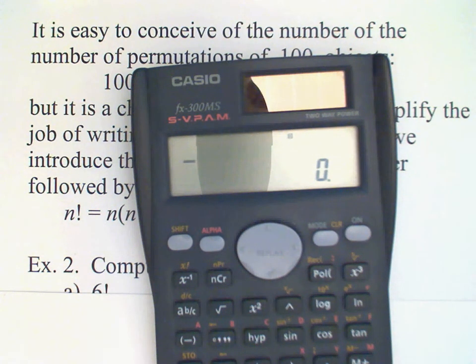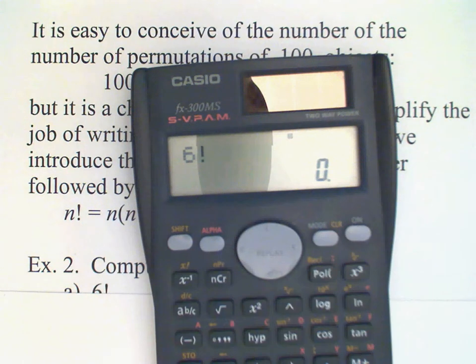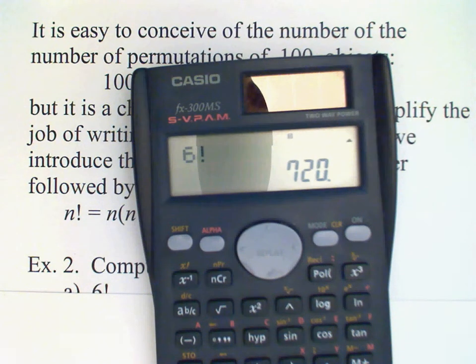So enter my six, and then there's that exclamation point, and then equals, and we get our answer which is 720. Does not take the calculator very much longer to calculate a much larger number, say, 20 factorial.